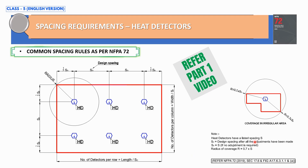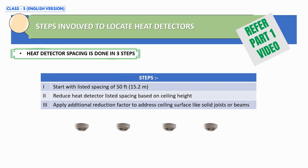Just for a thorough recap: heat detectors have a listed spacing of S, which equals 50 feet as per NFPA 72, and the design spacing between heat detectors is SD. The radius coverage for any heat detector is calculated using the formula 0.7 × S. The listed spacing is reduced if the ceiling height is more than 3 meters, and an additional reduction factor applies for solid joists or beams.